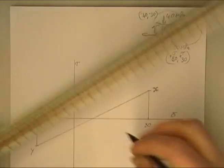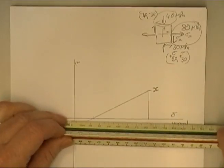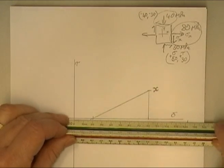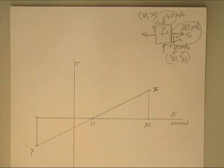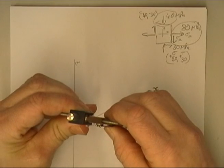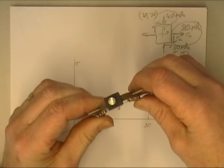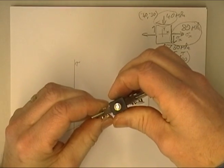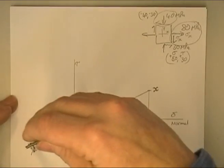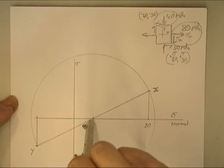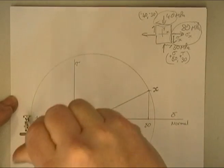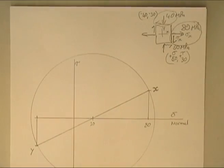The centre of the circle is at 20. Now we put a circle around that, and that's my Mohr's circle.